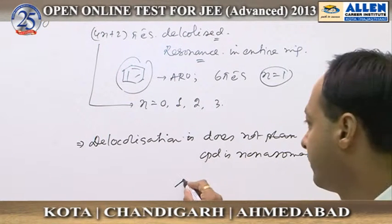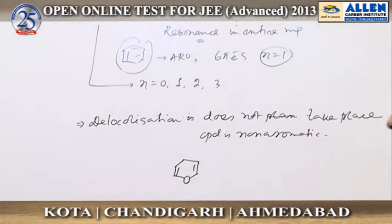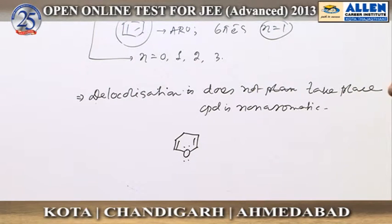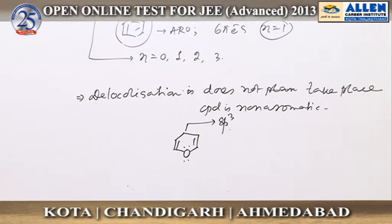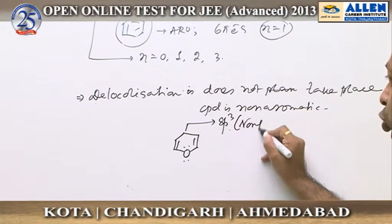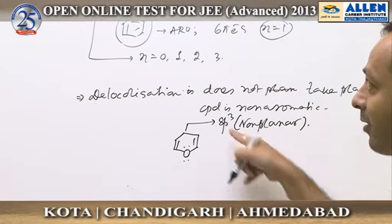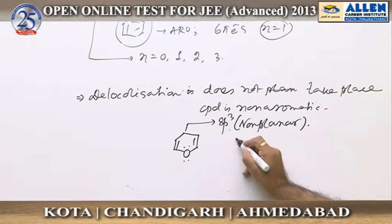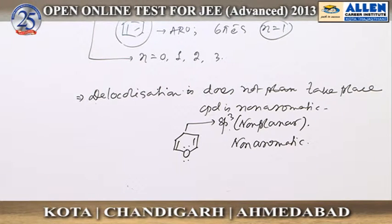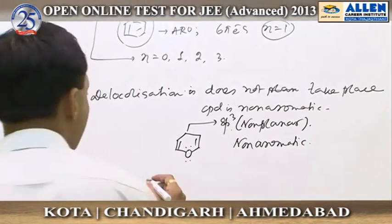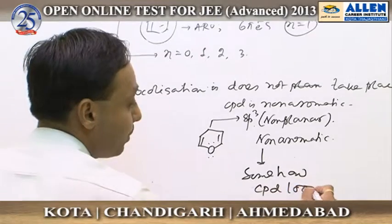For example, consider this compound — one of the carbons is sp3 hybridized, so planarity is lost and it becomes non-planar. Because of that, the pi electrons are not delocalized in the entire ring, so it is a non-aromatic compound. For a non-aromatic compound, the compound somehow loses planarity.